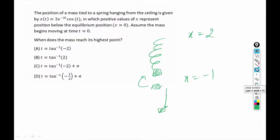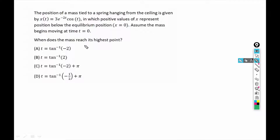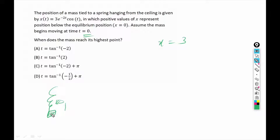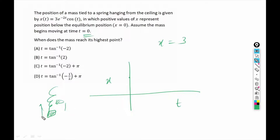To do that we have to understand the graph of this function. We start at t equals to 0. If we put t equals to 0 then we get x equals to 3. x equal to 3 means that we are starting 3 units below the equilibrium position. So if this is the equilibrium position, then we are starting 3 units below. When we drop it, the mass will go up because we are starting from below the equilibrium position. At t equals to 0, x is 3, so we are starting from here, and when we drop this mass it will go up. If it goes up then values of x will decrease.